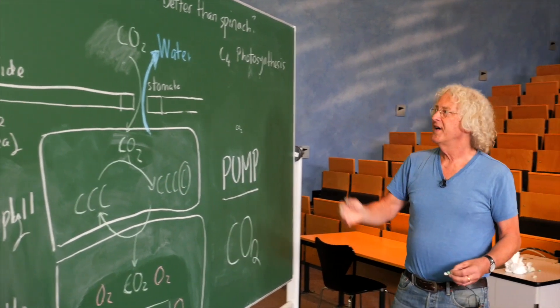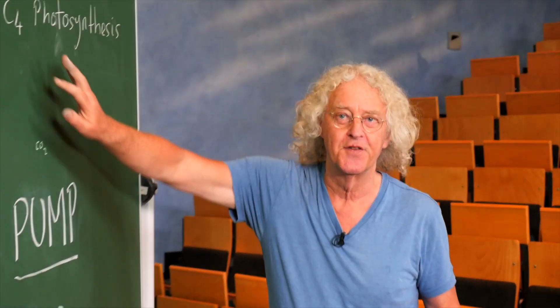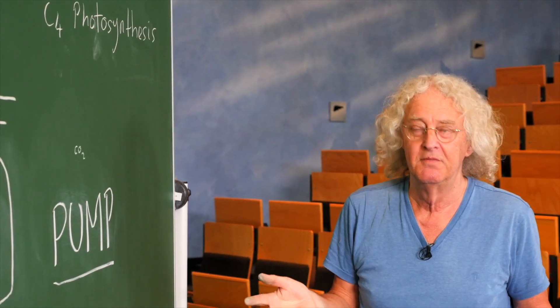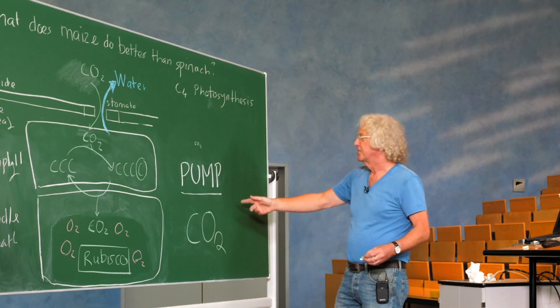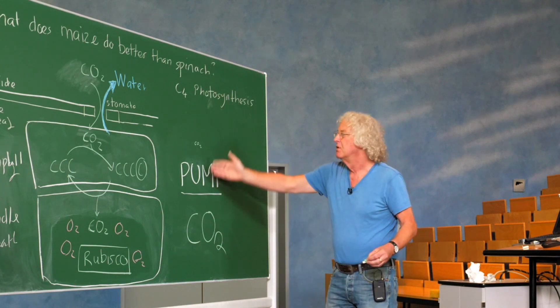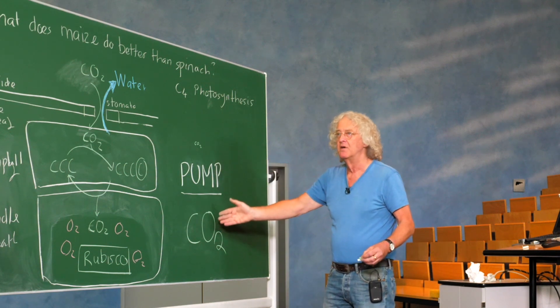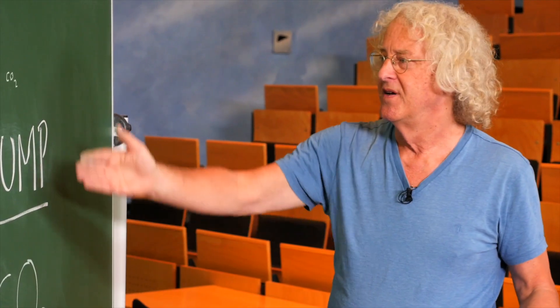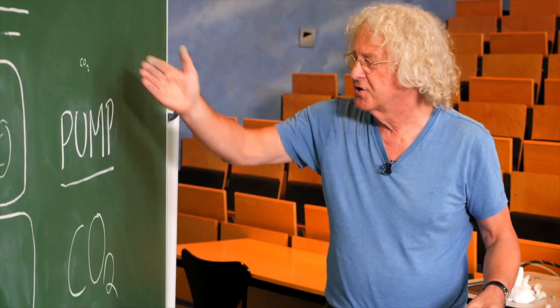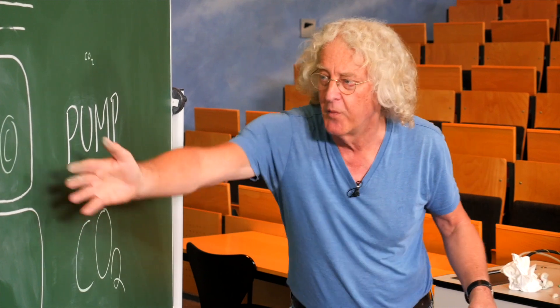So why haven't plants with C4 photosynthesis taken over the whole world? The answer, or a major part of the answer, is that this pump costs energy. Part of the light energy in these plants is used to concentrate carbon dioxide right by this pump.